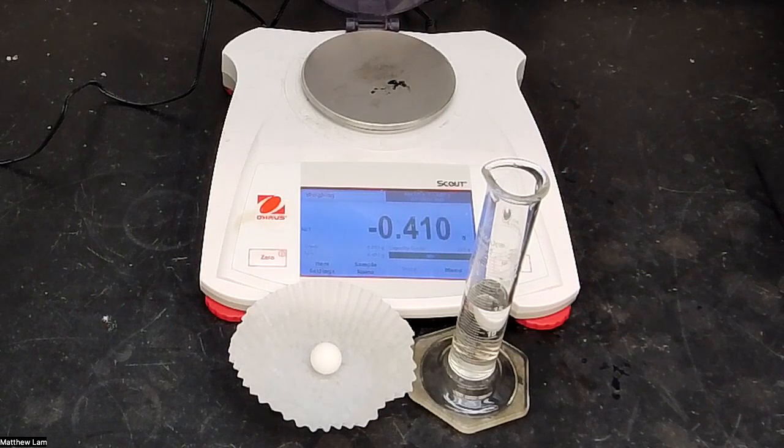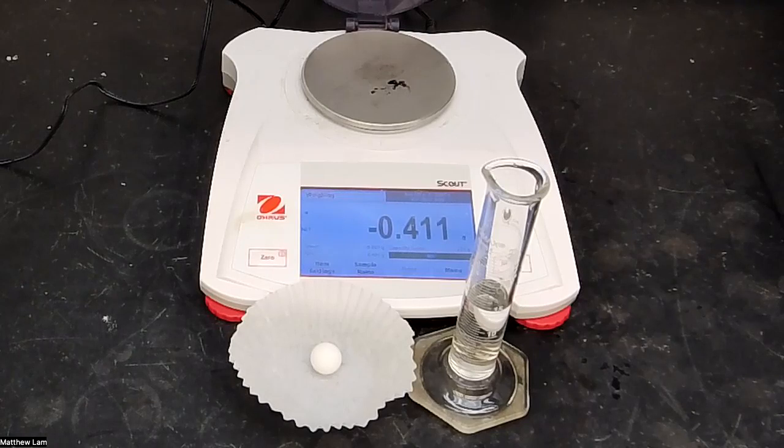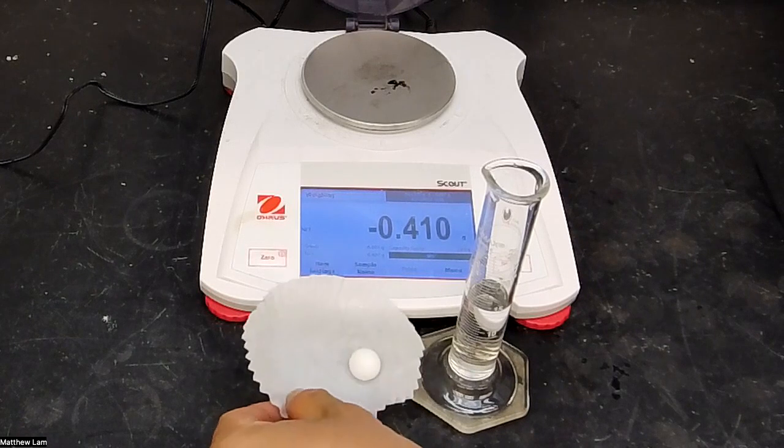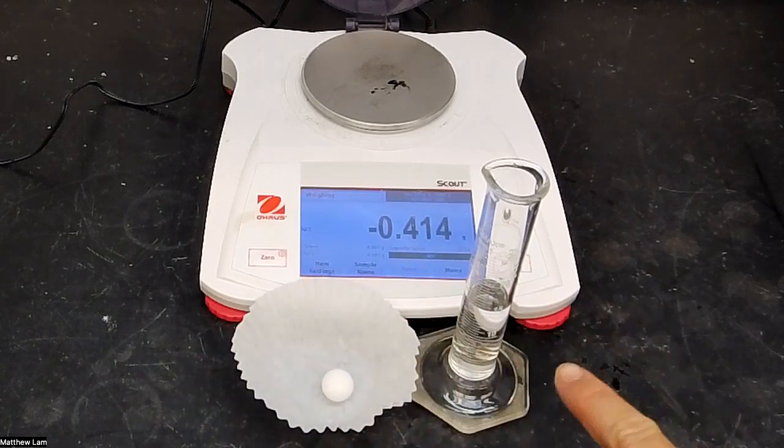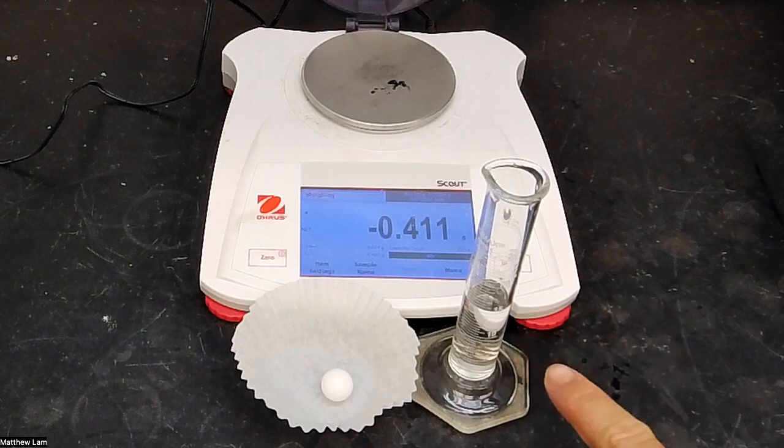Now, density's SI units typically is in kilograms per meters cubed. For this experiment, we are going to determine it in grams per milliliters. So let's quickly go over the materials for this experiment. We have a weigh boat, a Teflon ball, a graduated cylinder, a 25 mil graduated cylinder pre-filled with water, and a balance.